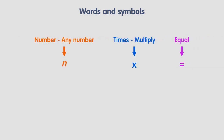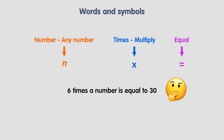For example, 'six times a number is equal to 30' — how do we turn this into a mathematical expression? The answer is 6n = 30. When a variable is multiplied by a number, we can omit the multiplication sign.